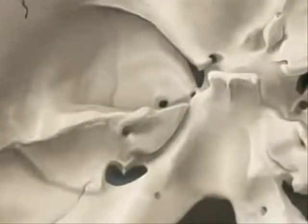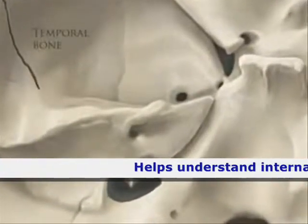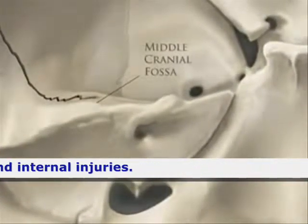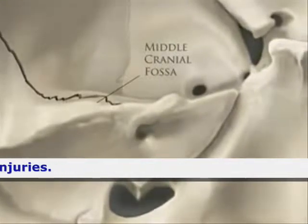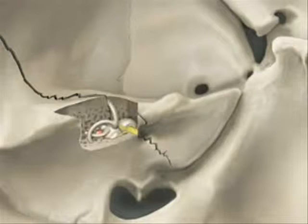The force placed on the skull by the impact results in a linear fracture of the temporal bone which traverses the floor of the middle cranial fossa — the bone that encases the structures of the inner ear. In this case, the fracture could affect the integrity of the bony labyrinth located within this structure.